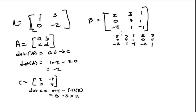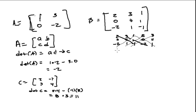Then I draw these little diagonal lines: 2, 4, -1, then 3, 1, -2, and then 1, 0, 1, and I multiply those. Then I have these other diagonal lines going the other way, and I multiply those. Then I add together the ones that I multiplied this way, and I subtract those.